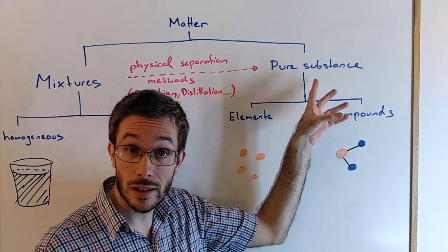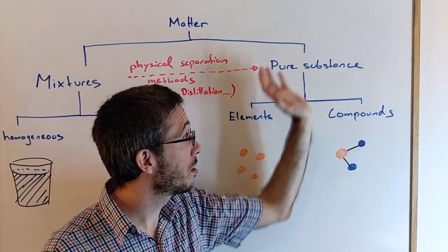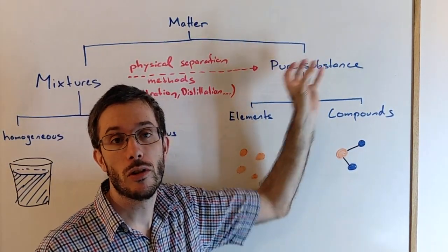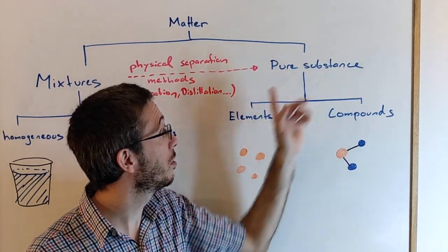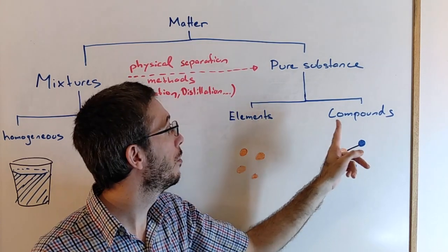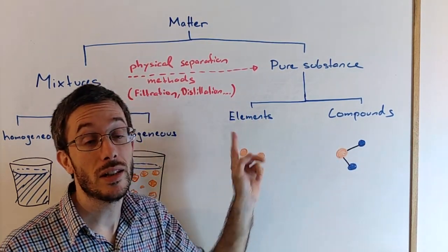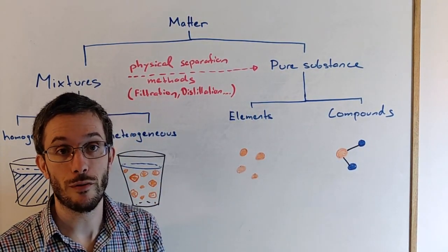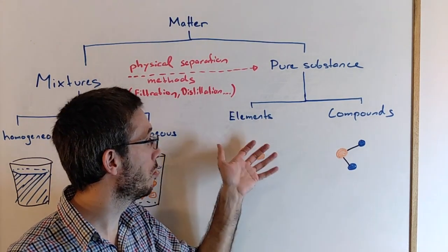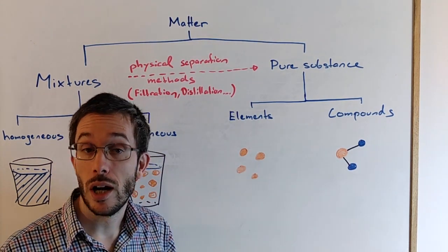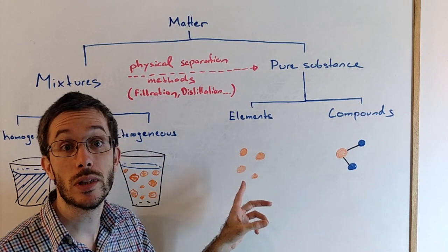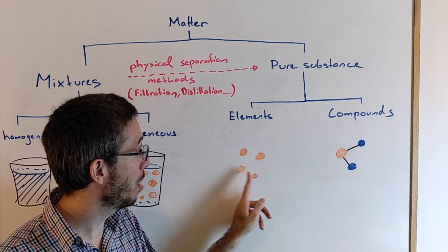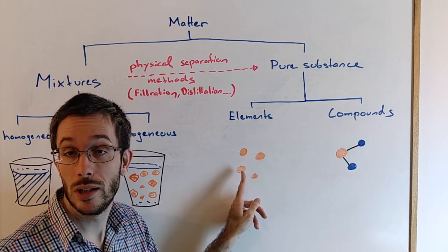On the pure substances side, pure substances are materials that you cannot separate anymore with physical separation methods. So you have either elements or you have compounds. An element is basically a material that's made out of one element. Hydrogen, oxygen, and so on. If we could zoom in and look at the individual atoms or particles in there, they would be all made of the same type of atoms or elements.